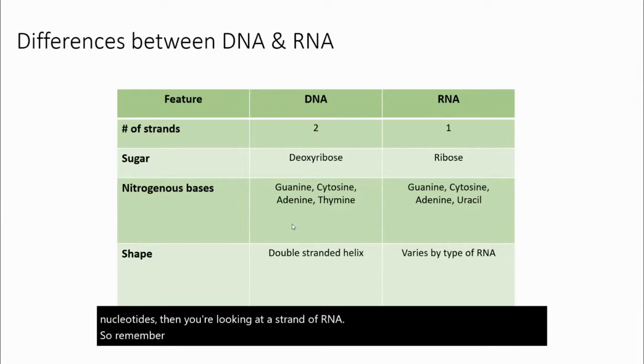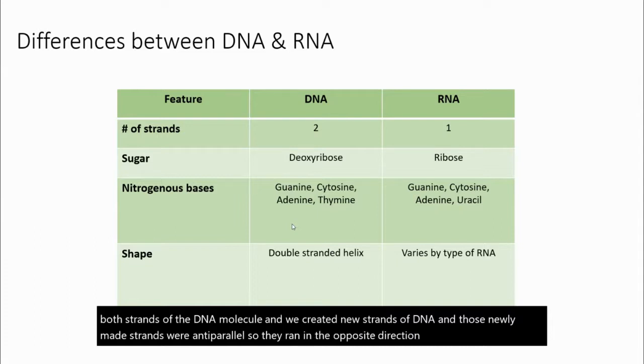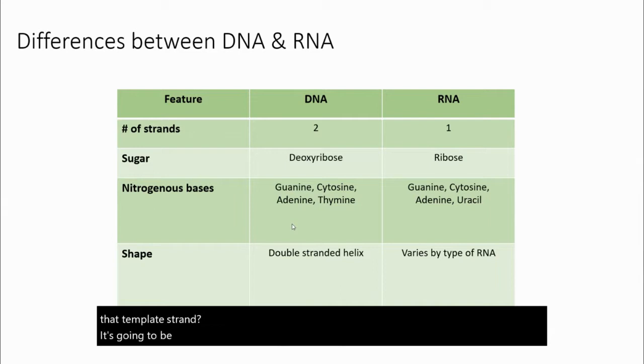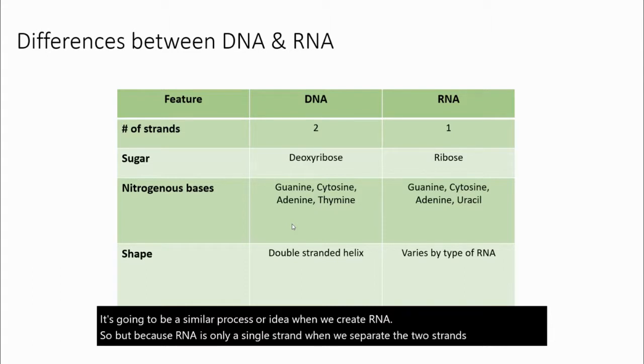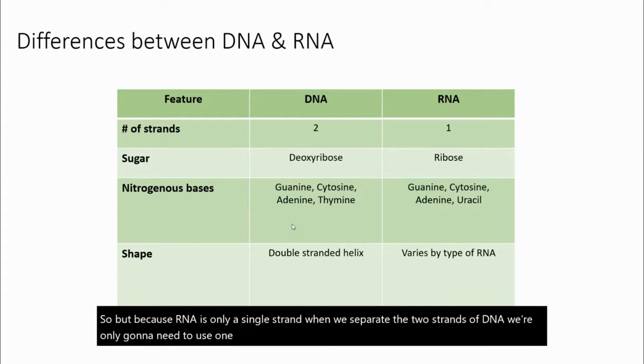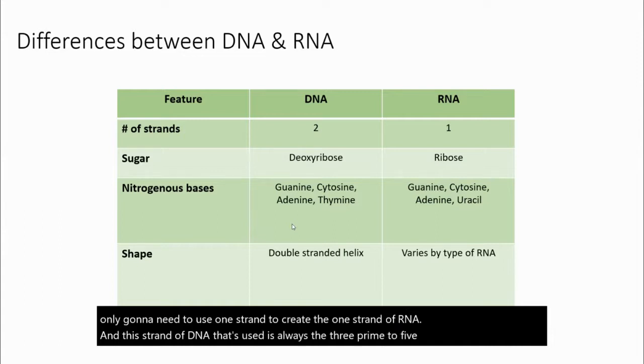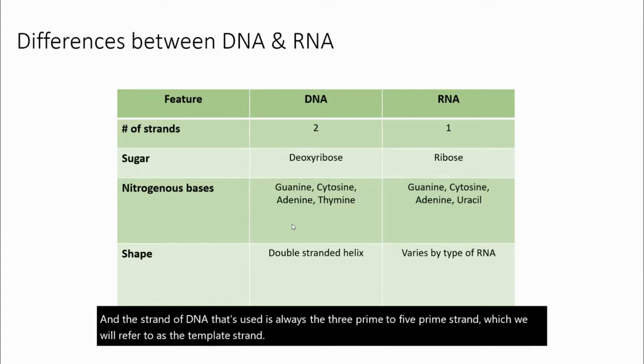Remember, think back to DNA replication. When we separated both strands of the DNA molecule and we created new strands of DNA, those newly made strands were anti-parallel, so they ran in the opposite direction, and complementary to that template strand. It's going to be a similar process when we create RNA. But because RNA is only a single strand, when we separate the two strands of DNA, we're only going to need to use one strand to create the one strand of RNA, and the strand of DNA that's used is always the three prime to five prime strand, which we will refer to as the template strand, and that is because RNA is always made five prime to three prime.